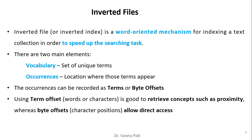The occurrences can be recorded as term offset or byte offset. Using term offset, that is words or character count, it is good to retrieve concepts such as proximity, whereas byte offset, that is character position, allows direct access — we can easily find out the location of that particular keyword.